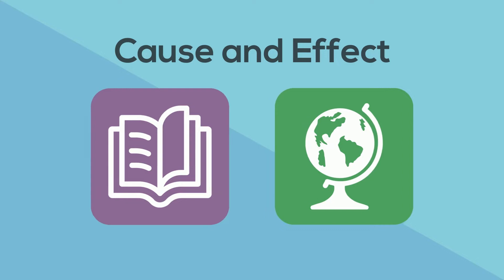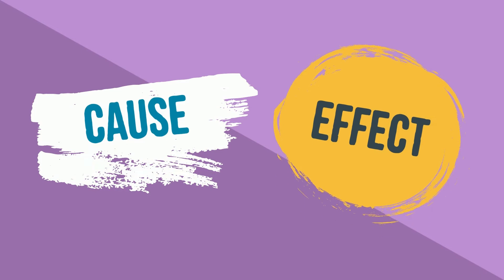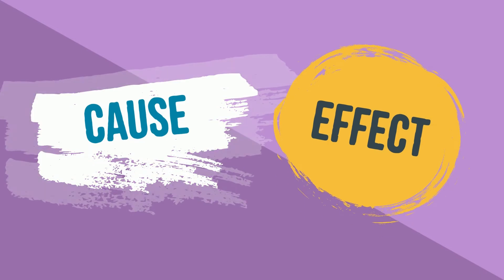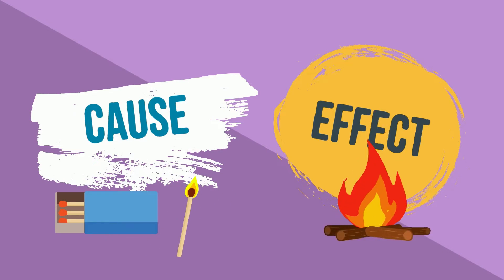First, let's clear up what the terms cause and effect mean. Cause and effect is the relationship between two things when one thing, the cause, makes something else happen — the effect. A cause is the first thing that occurs. As a result, an effect is what follows.